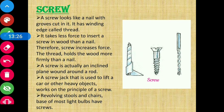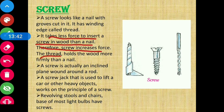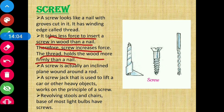How does a screw help us perform work easily? It takes less force to insert a screw in wood than a nail — therefore, a screw increases mechanical advantage. The thread holds the wood more firmly than a nail. The grooves grip the wooden block firmly, which is why it is easy and less force is applied compared to a nail. A screw is actually an inclined plane wound around a rod.